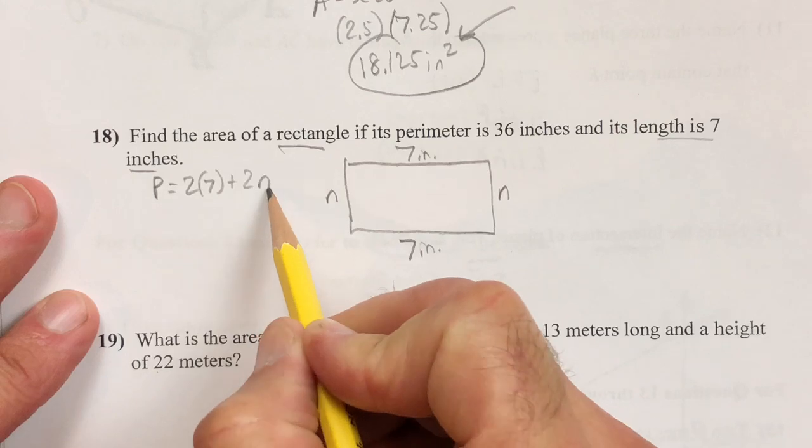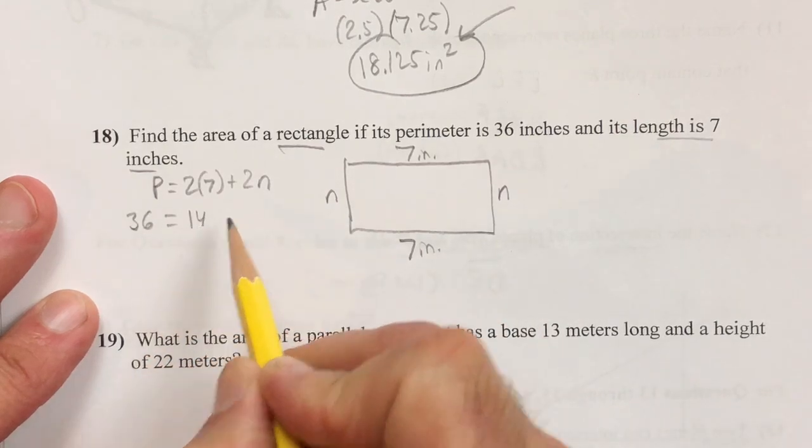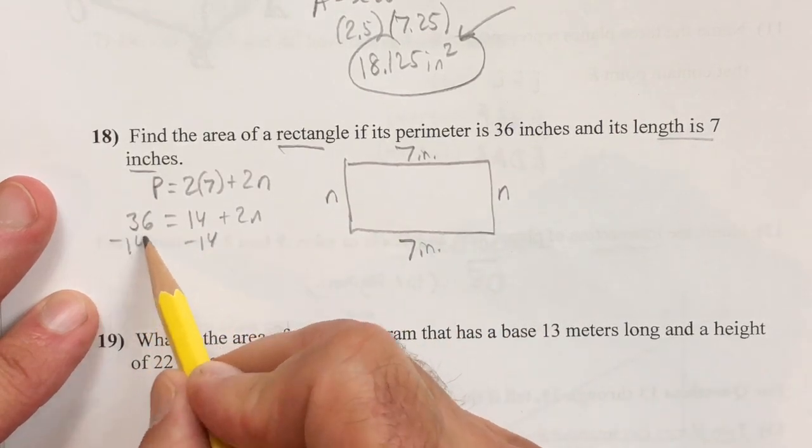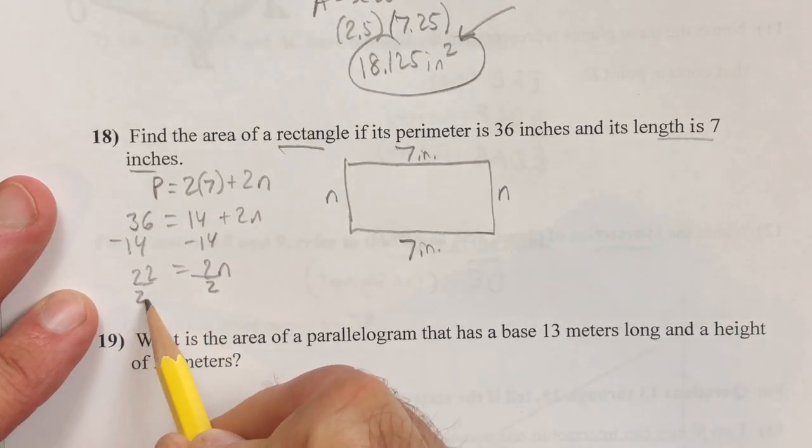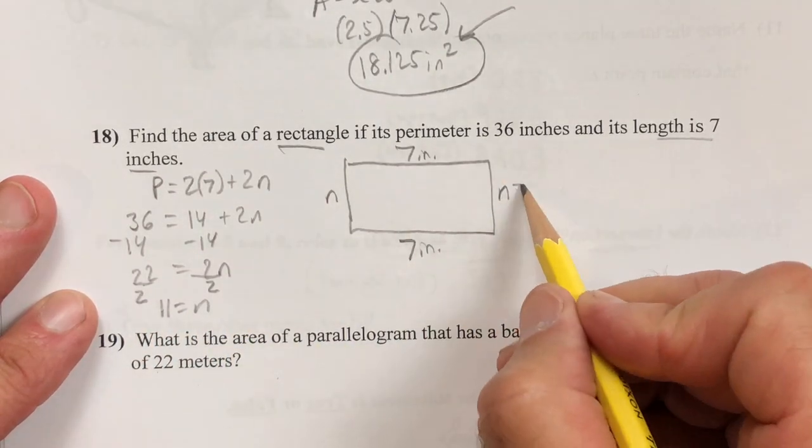As you take the perimeter, which is two times the seven and two times the n, and it has to equal 36. Subtract the 14 from both sides. And after you divide by two, you notice the missing sides have to be 11.